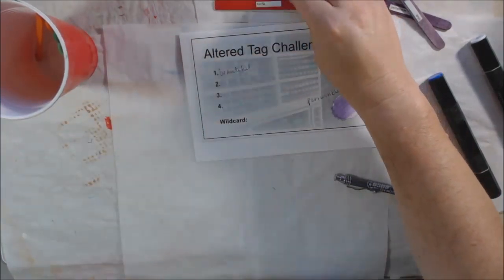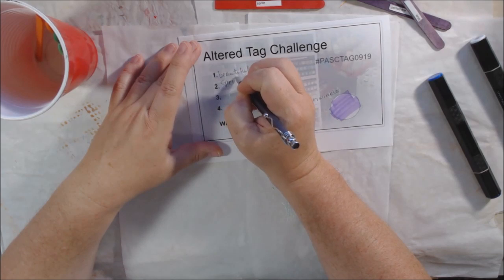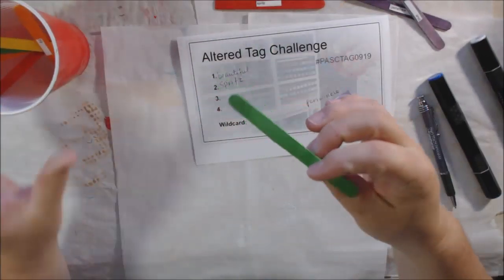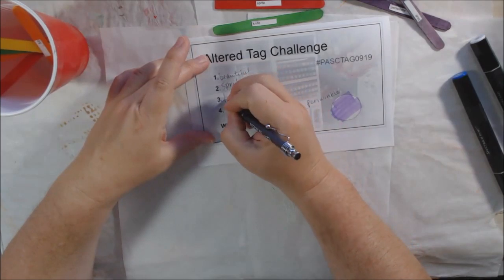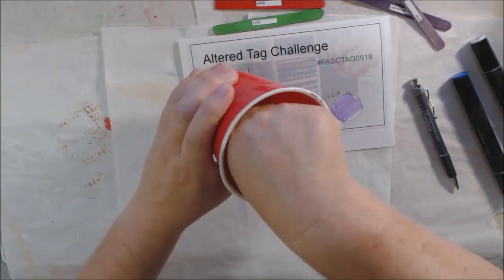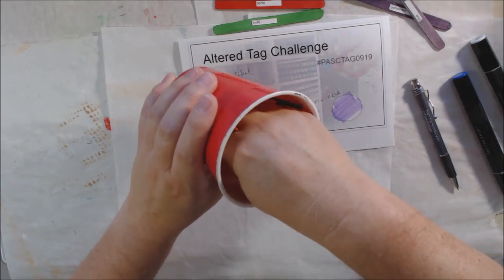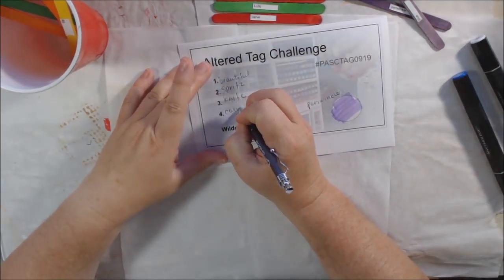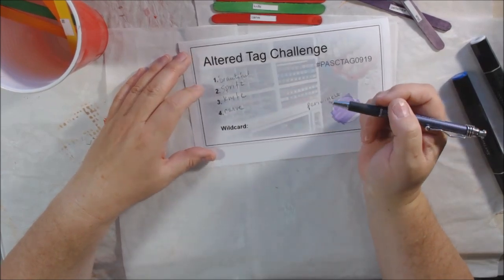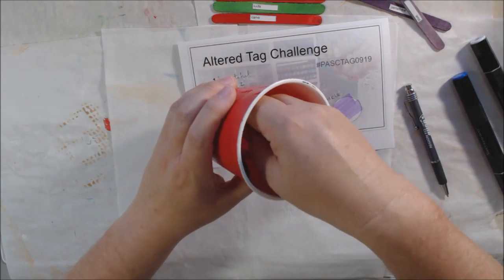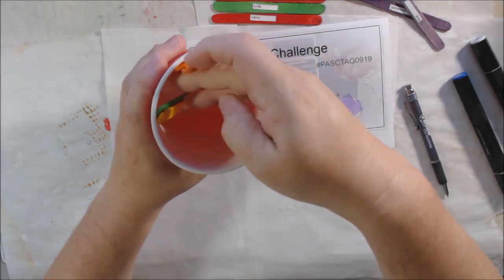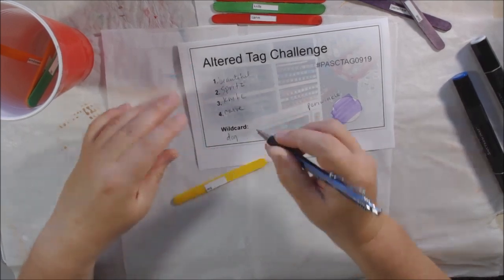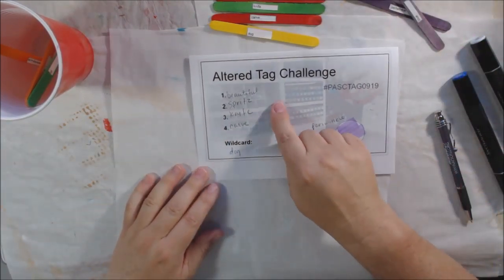Next one is spritz. Next one is knife. And carve. It's kind of funny, knife and carve are a little bit similar, so you could probably double those up. And then the last one is dog. You could make a beautiful dog if you want to. So that's the tag challenge.